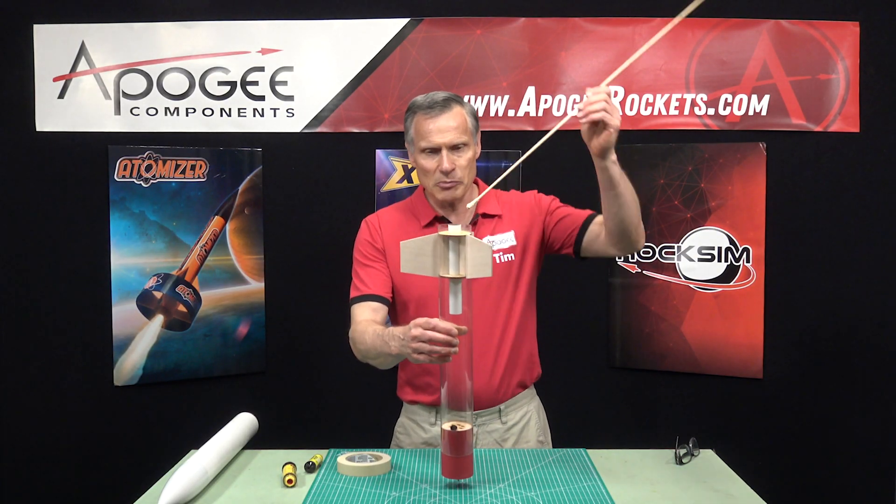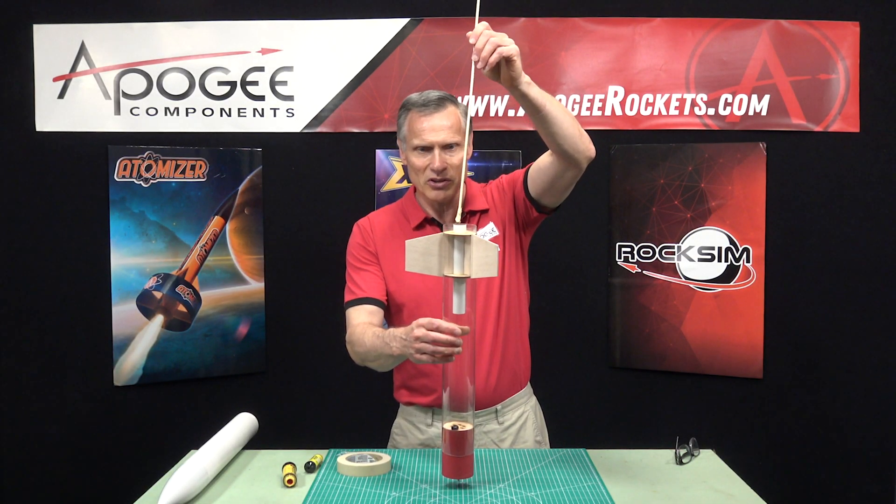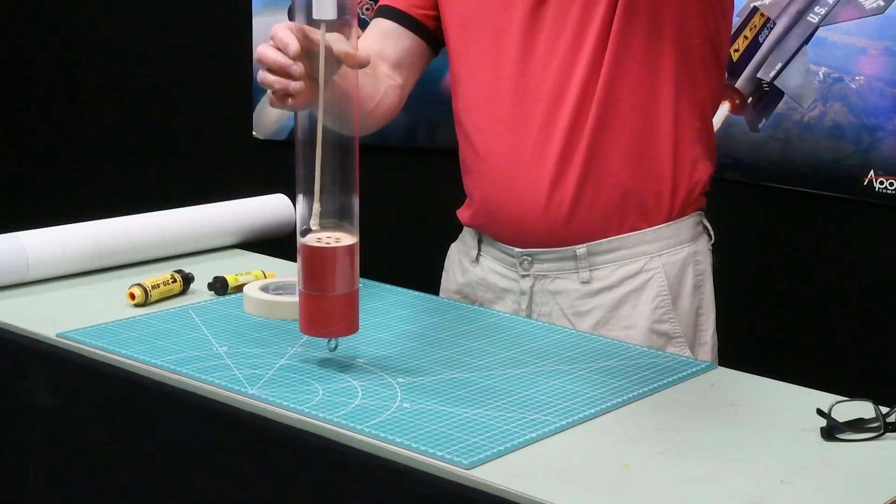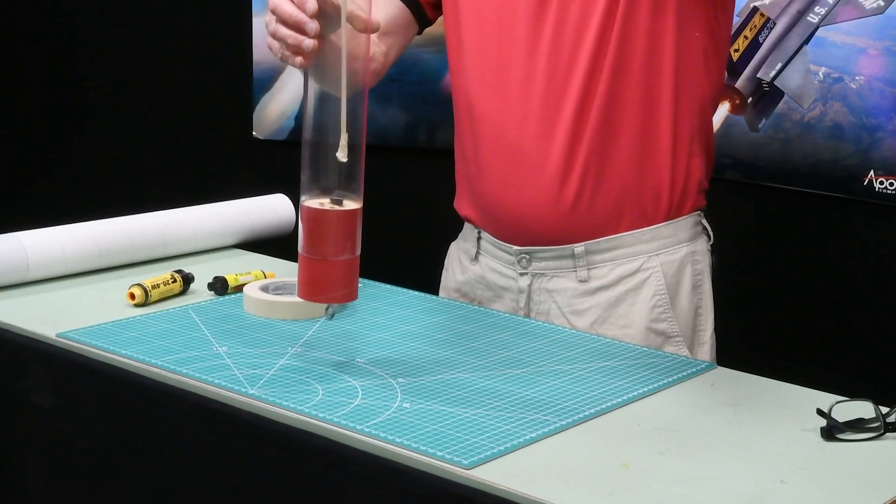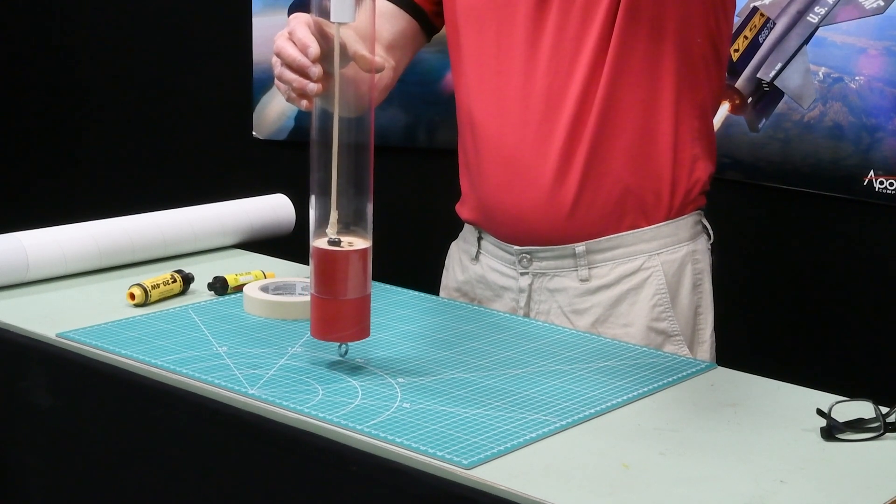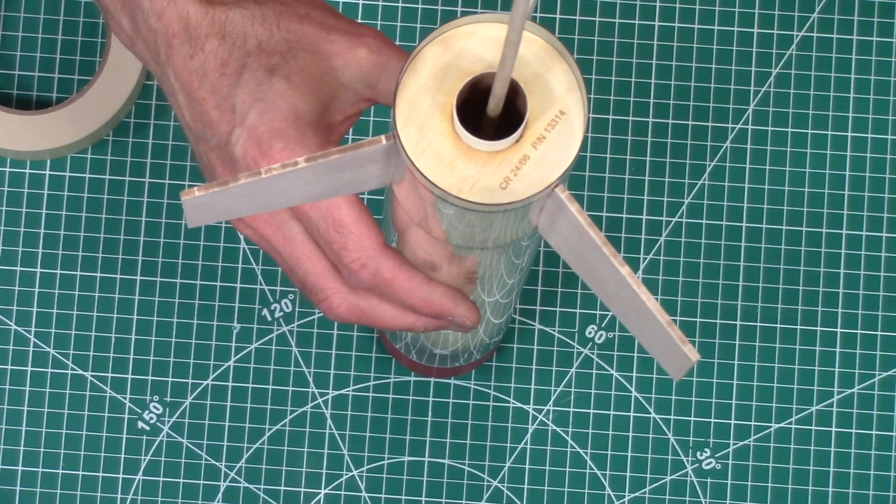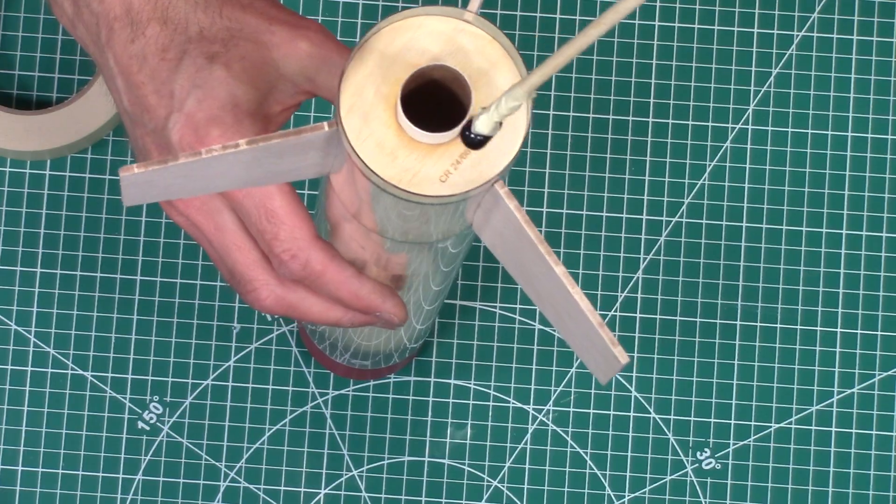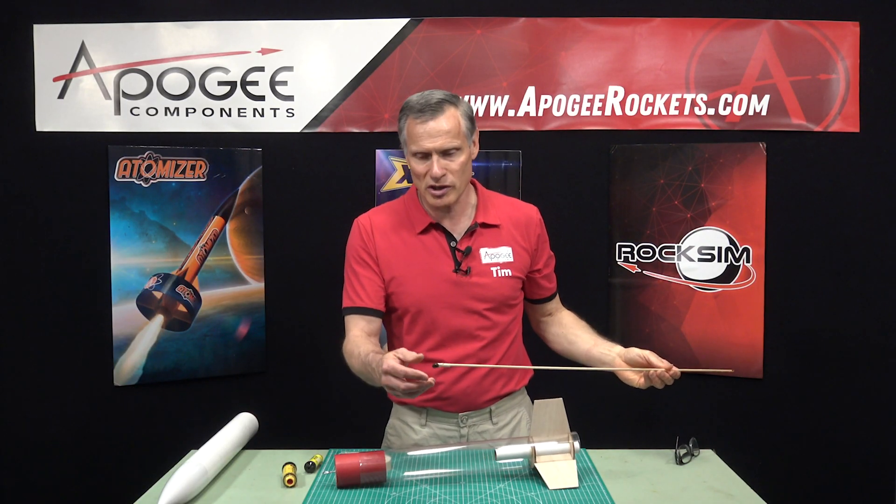And so it's a simple matter of you just take the dowel and you drop it into the tube and you fish around until you have it and you can just pull it out like that. Very simple trick.